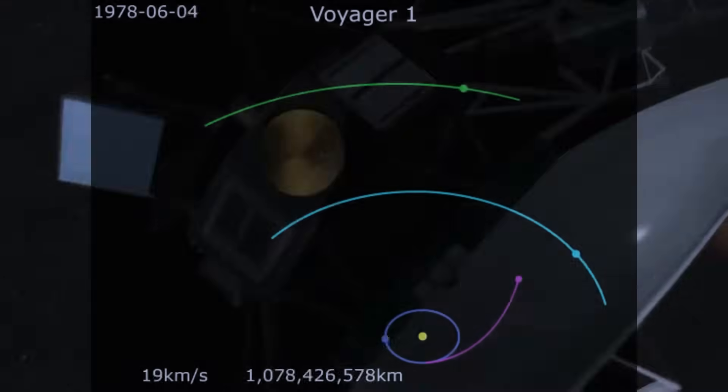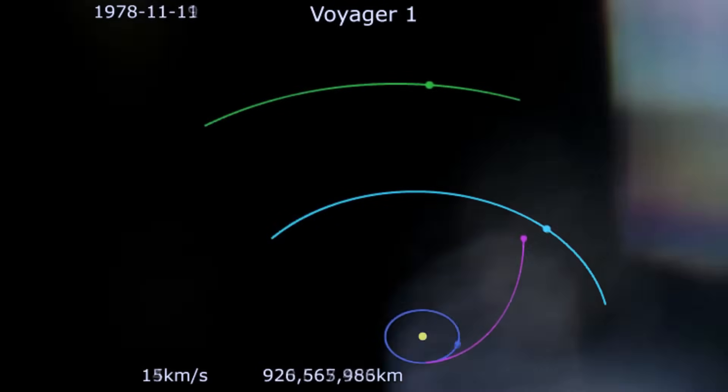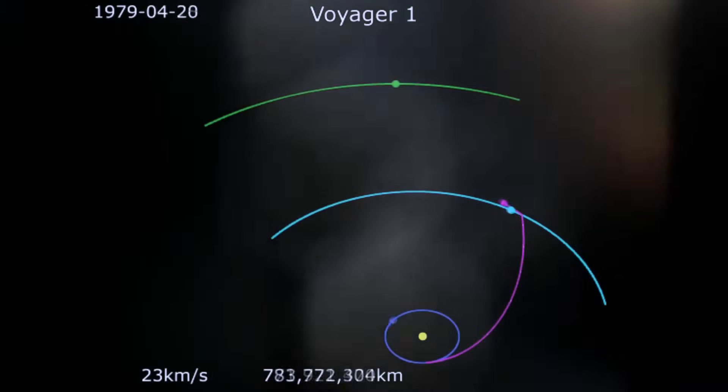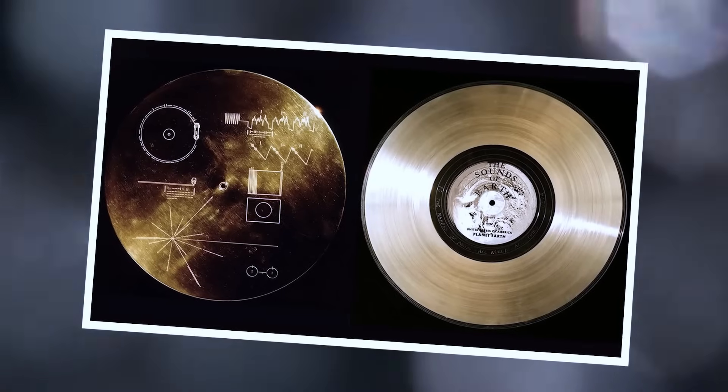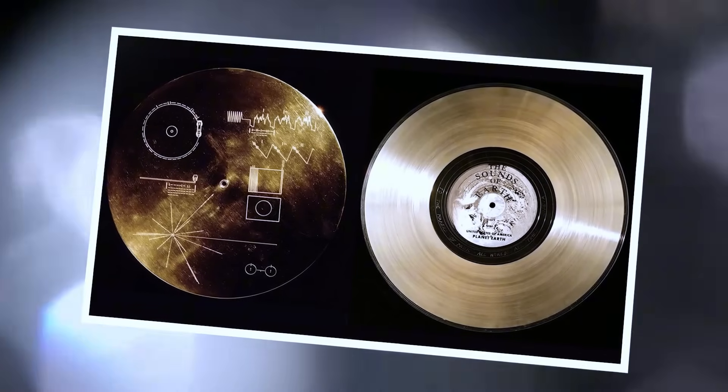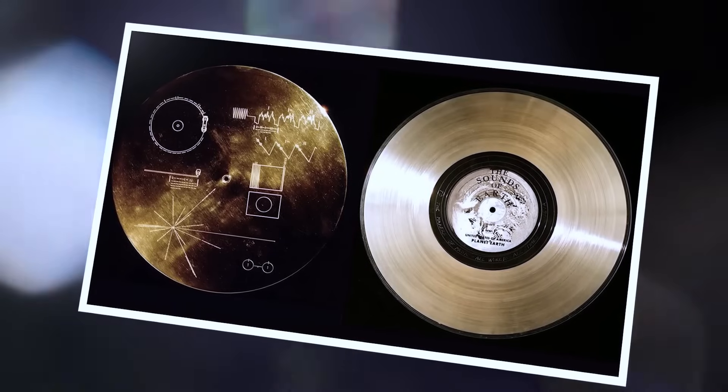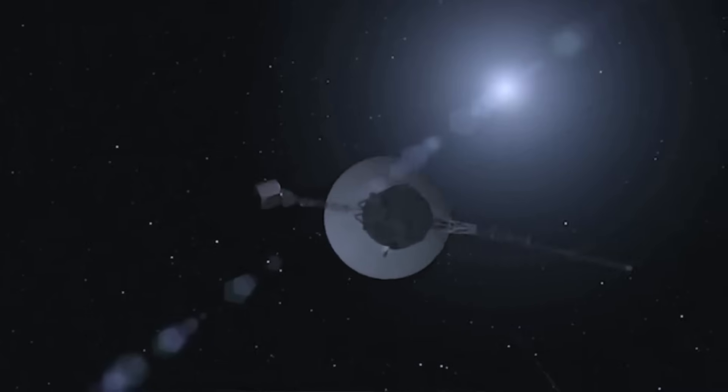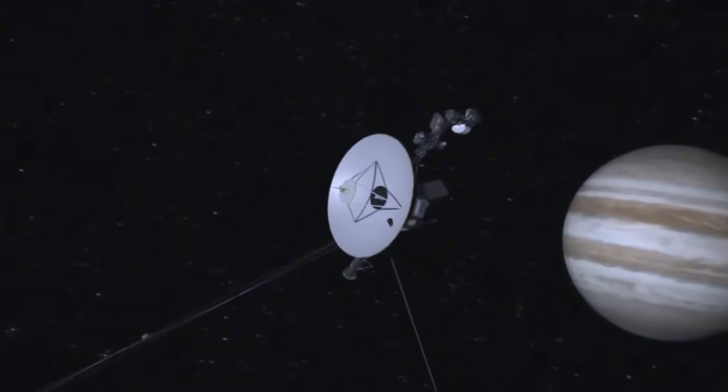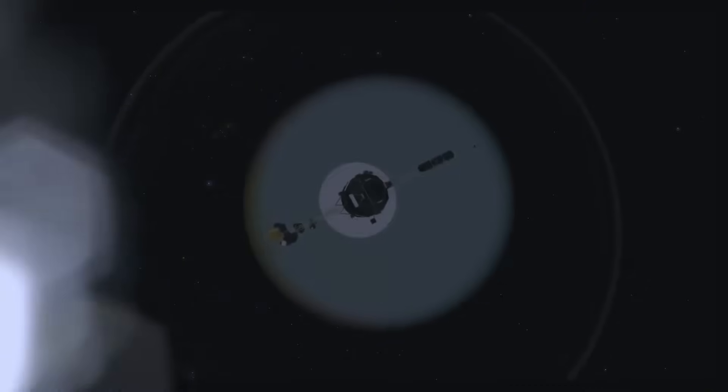When Voyager 2 blasted off in 1977, it carried more than instruments and cameras. It carried humanity's most hopeful message—a golden disc filled with Earth's music, greetings, and sounds, launched as a cosmic time capsule for anyone, or anything, that might find it. We thought the mission was a one-way message into the void. But nearly 50 years later, Voyager 2 has sent back something chilling. Not just a faint signal, but a reply.